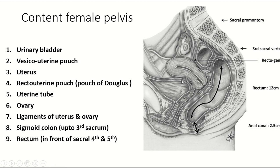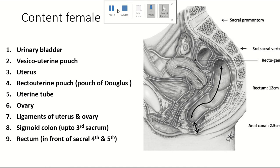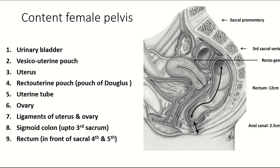Due to this peritoneal arrangement, two pouches are formed. The first is the vesicouterine pouch — vesico means urinary bladder — so this pouch is in front of the uterus. Behind the uterus there is another pouch called the pouch of Douglas, which is the most dependent part of the body. Any fluid or blood collection in the abdominal cavity accumulates here. On vaginal examination, when the finger enters the posterior fornix, one can easily feel fluid collection in the pouch of Douglas.